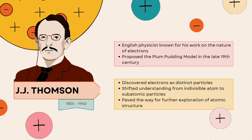The next scientist is J.J. Thomson, an English physicist known for his work on the nature of electrons, who proposed the plum pudding model of atoms in the late 19th century. He discovered electrons as distinct particles, shifted understanding from indivisible atoms to subatomic particles, and paved the way for further exploration of atomic structure.